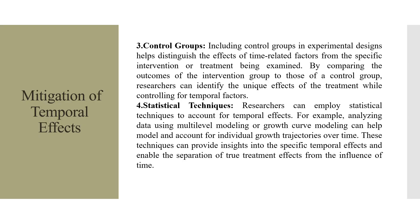Including control groups in an experimental design helps distinguish the effects of time-related factors from the specific interventions or treatments being examined. By comparing the outcomes of the intervention group to those of a control group, researchers can identify the unique effects of the treatment while controlling for temporal factors. Additionally, statistical techniques such as multi-level modeling or growth curve modeling can help model individual growth trajectories over time and separate true treatment effects from temporal influences.